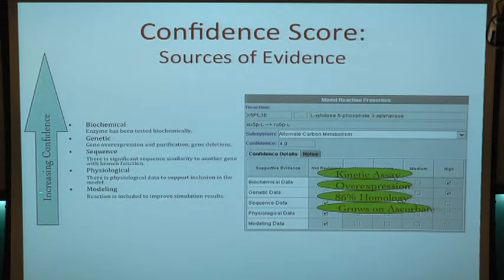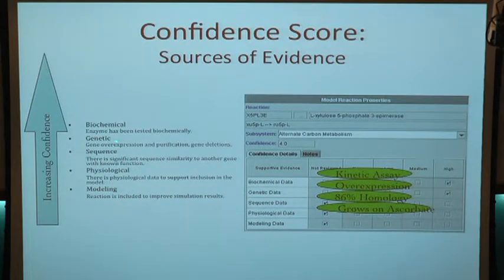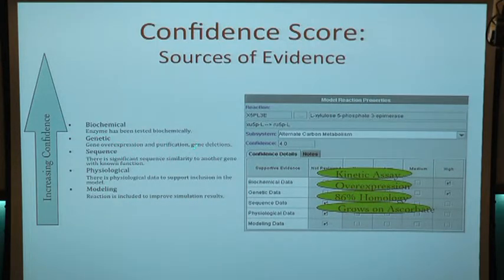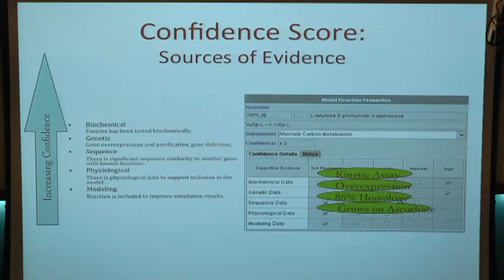Here are the confidence scores used generally in the field. The top level confidence is if there's actual biochemical evidence — someone has cloned the gene, done the biochemical assays, and we know exactly what is catalyzed. Step down from that is genetic: overexpression and purification showing the function. Sequence would be homology. Physiologic means we know the function is there, like filling in for lysine. And modeling is when you have very low confidence reactions — the whole network doesn't work unless you put in a few extra reactions to fill in unknown gaps. Those are the levels of evidence, from zero up to four.